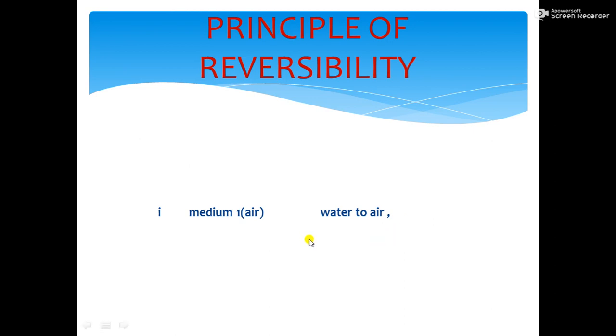For that, consider a pair of media, air and water. Medium 1 as air and medium 2 as water. And a normal drawn to the surface of separation of 2 media. And consider a ray of light incident obliquely on the surface of separation.